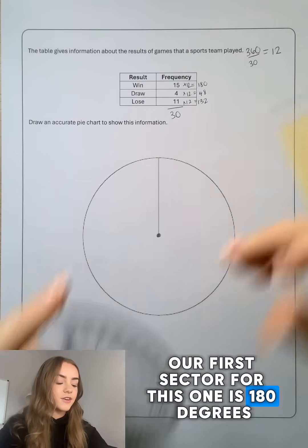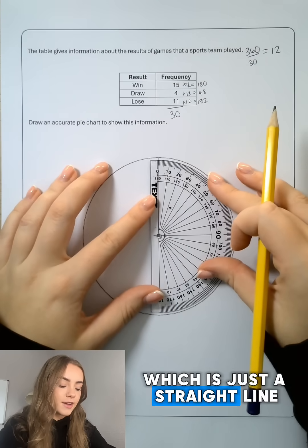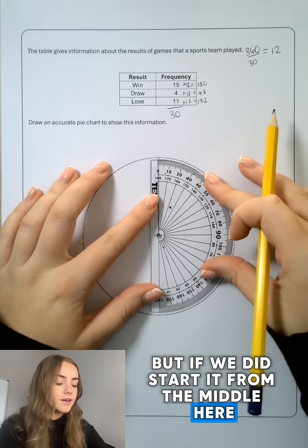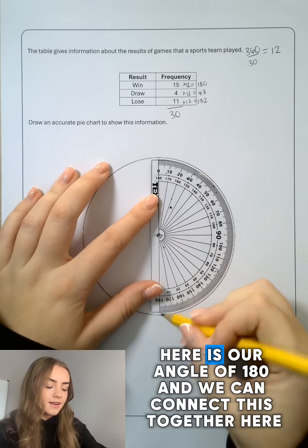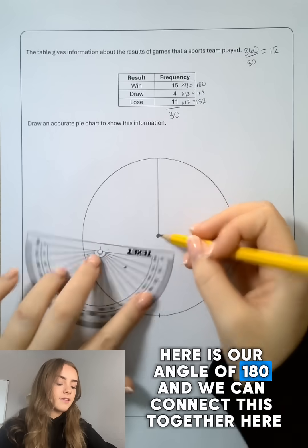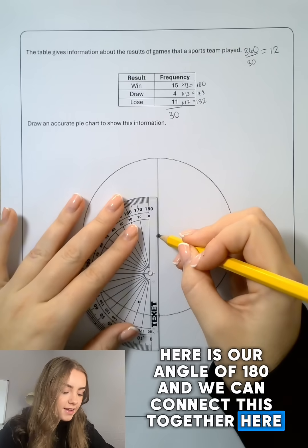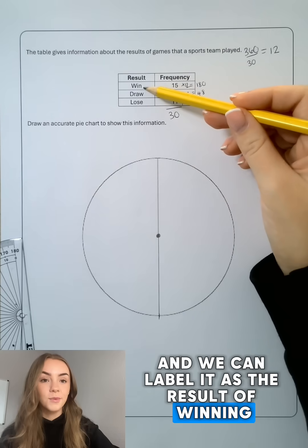Our first sector for this one is 180 degrees, which is just a straight line. But if we did start it from the middle here, start from zero and come all the way around, here is our angle of 180. We can connect this together here and we can label it as the result of winning.